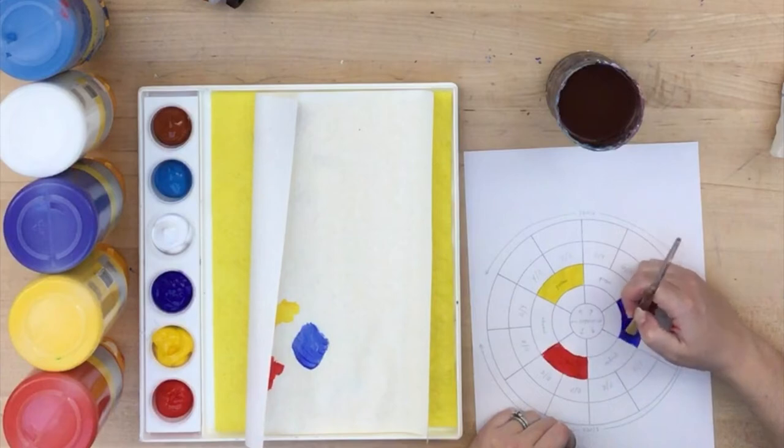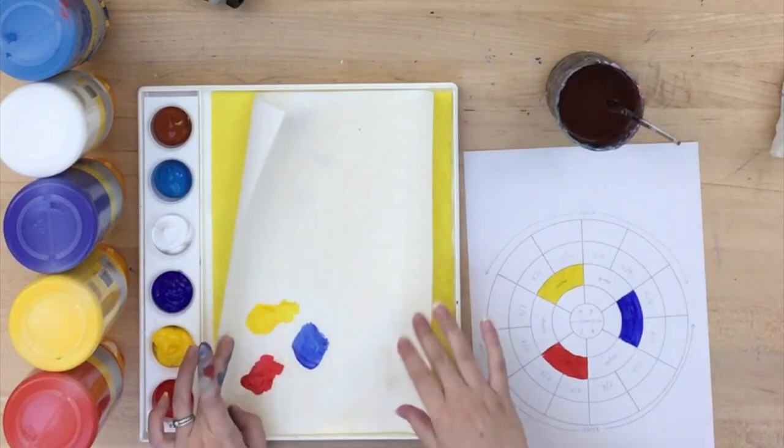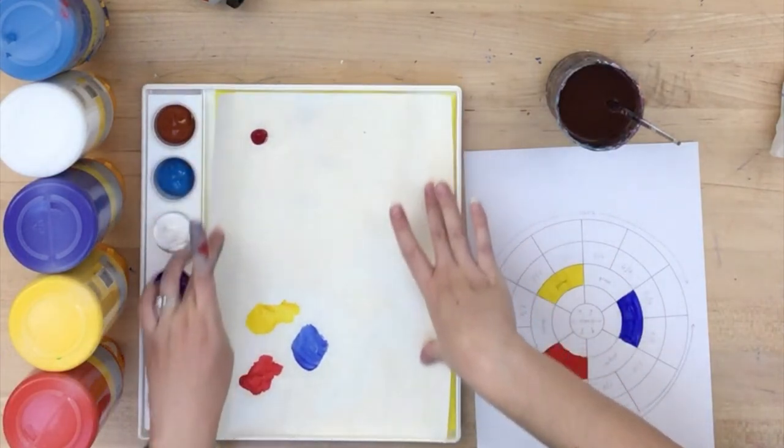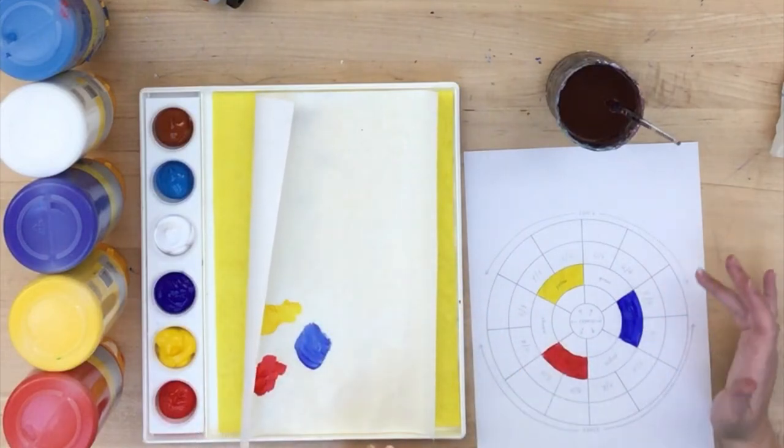All right, so I filled in my three primary colors. Again, they're primary because we can't make them. Our paint palette starts with these three colors because they cannot be mixed. We can't make a red. We can't make blue, and we can't make yellow.